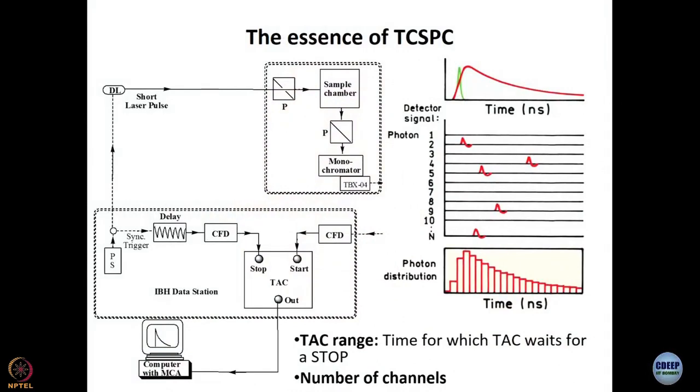The second important term is number of channels. TAC range is associated with the TAC, but number of channels is associated with the multi-channel analyzer (MCA). Suppose you have a 50-nanosecond TAC range and 1000 channels — then each channel represents 50 picoseconds. That is the time resolution. If instead you have 10,000 channels, the resolution becomes 5 picoseconds per channel.